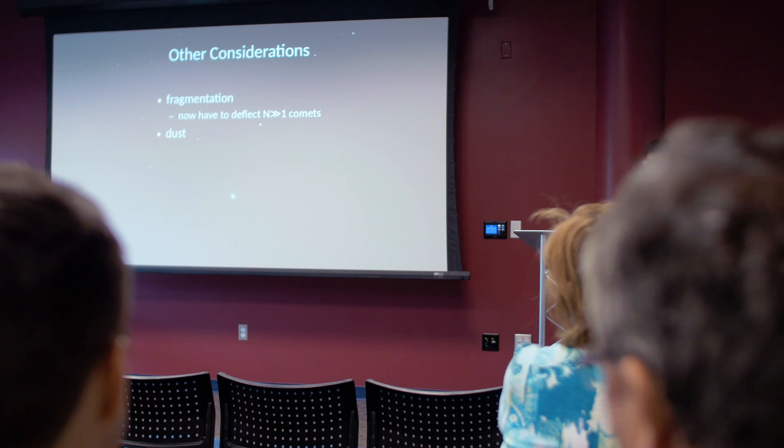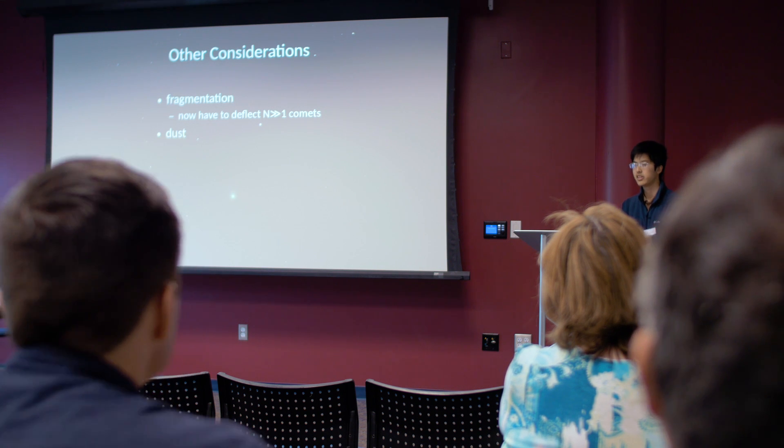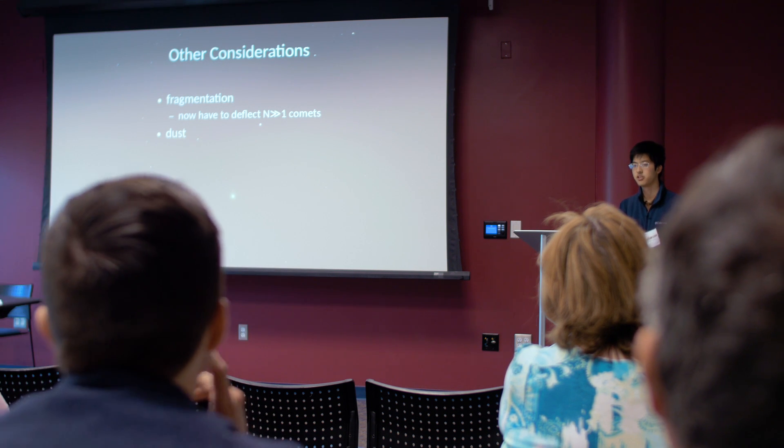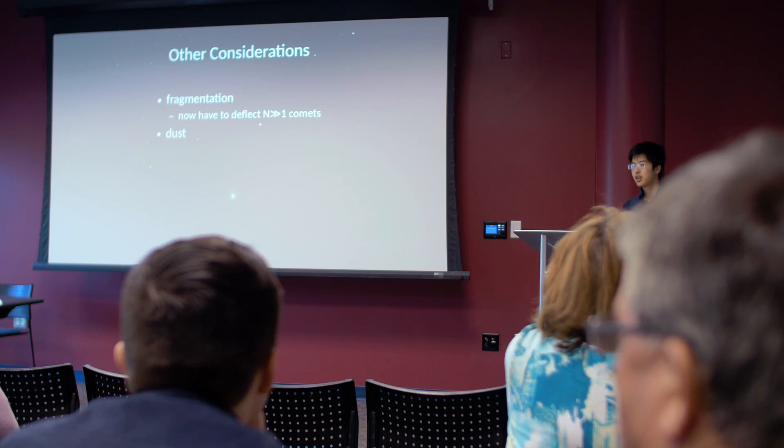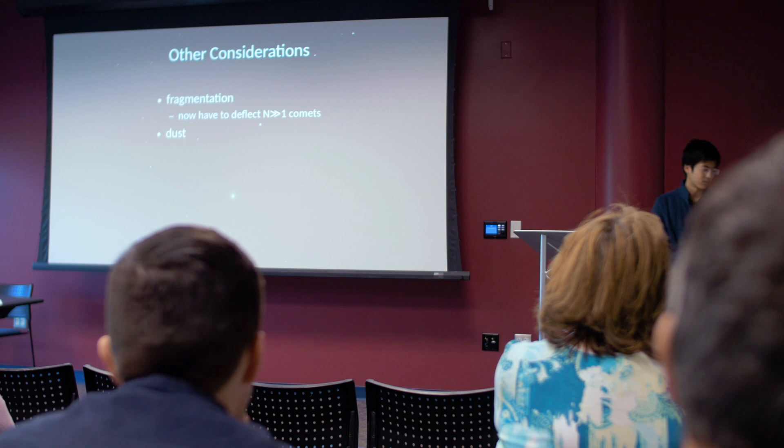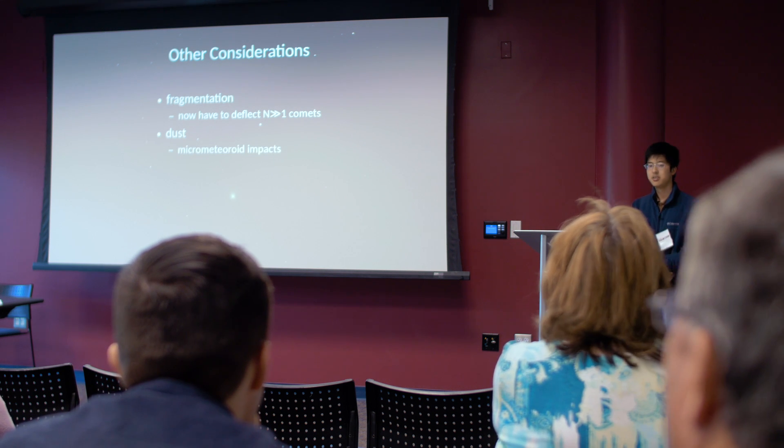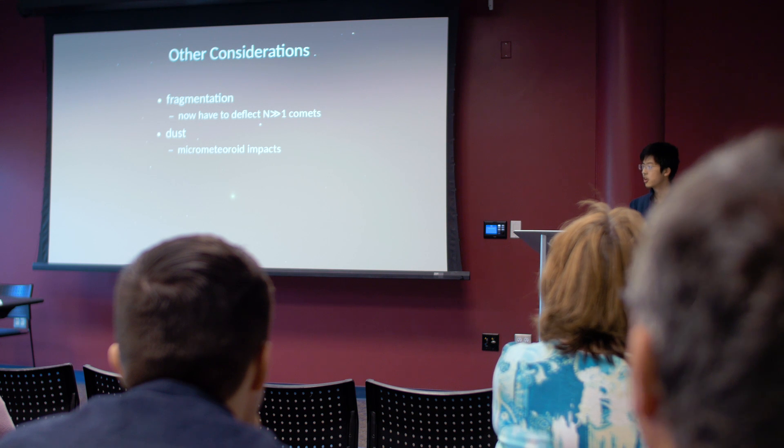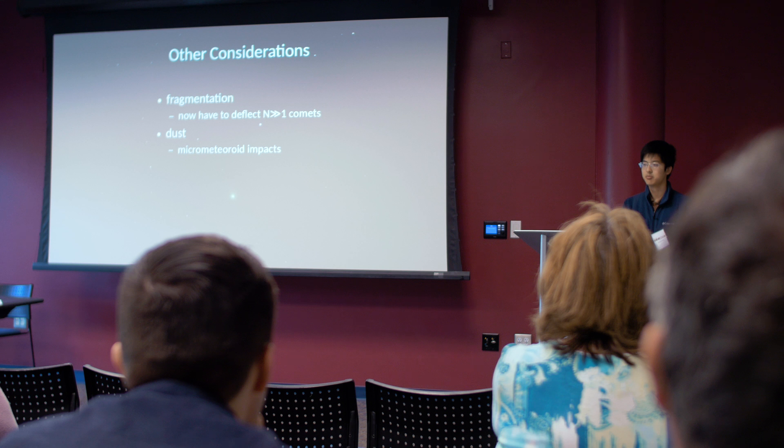So you also have to consider dust, because when the comet, when you vaporize a comet, it takes out a bunch of dust from the nucleus. And you end up with a big dust cloud, which seems harmless and in fact is harmless dust on the ground. But for satellites in space, like GPS satellites, a large cloud of dust can take those out. And then we'd be left without our infrastructure in space.